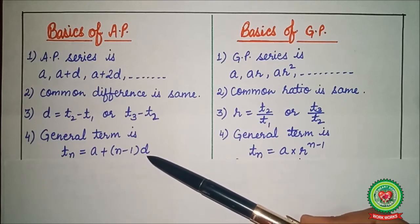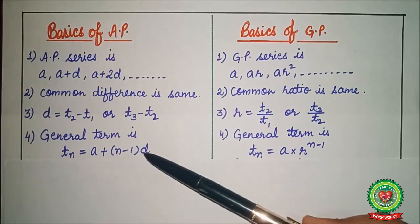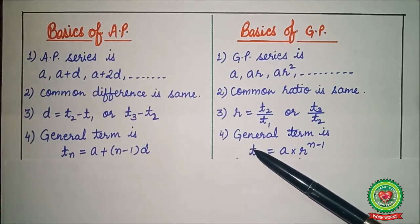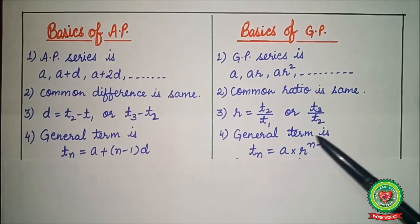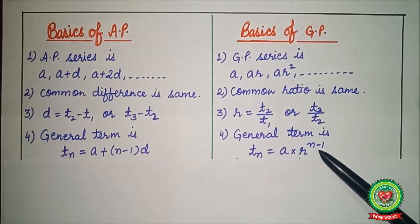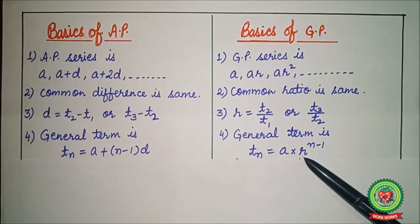General term in AP is tn equals a plus n minus 1 times d, where a is the first term, n is the number of terms, and d is the common difference. In GP, general term is tn equals a times r raised to power n minus 1, where n minus 1 is in power, a is the first term, r is the common ratio, and n is the number of terms.